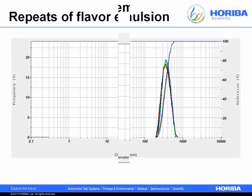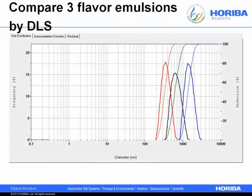Three different flavor emulsions show quite dramatic differences in particle size by DLS. These were actually three different flavors — identifiable because they each smelled a little different (one lemony, one orangey) — though the customer labeled them A, B, and C.